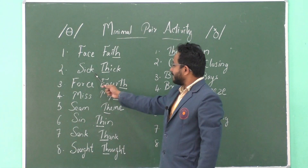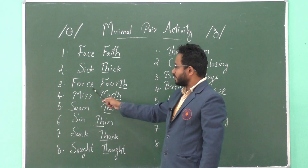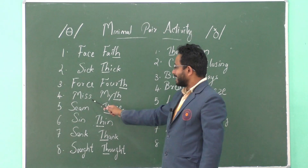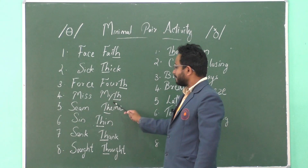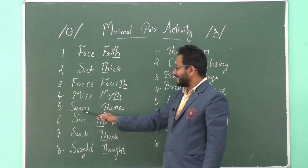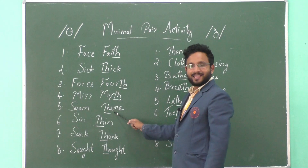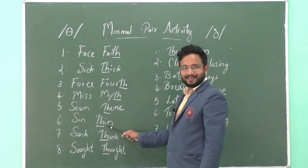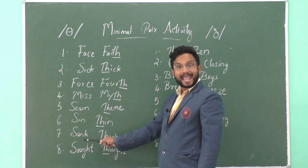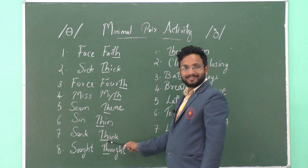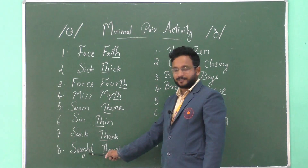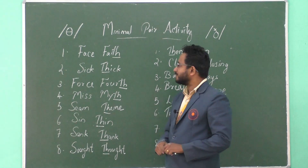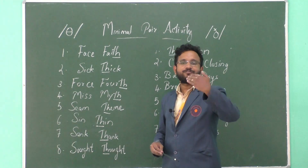Seek — thick. Force — fourth. Miss — myth. Seen — thin. Sin — thin. Sank — thank. Sought — thought. Now let's pronounce the pairs a bit more faster.